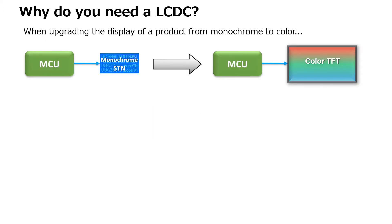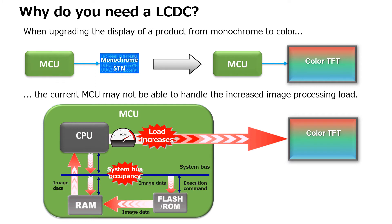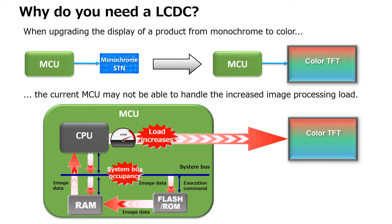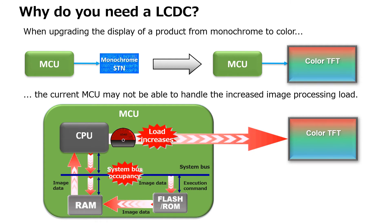What situations require a display system to have an LCD controller? One typical use case is when upgrading a device from a monochrome panel to a color panel. Since the image processing load for a color display system is much higher than a monochrome display, often the MCU is not capable of handling the increased load without affecting system performance.